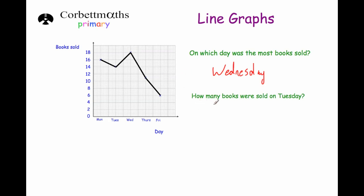The next question says: how many books were sold on Tuesday? So if we go to Tuesday, up and across, we can see that 14 books were sold on Tuesday. So 14 books were sold on Tuesday. Let's have a look at the next question.